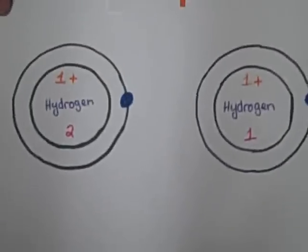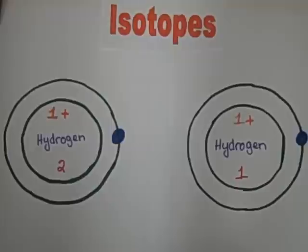There are also these things called isotopes, which are atoms of the same element but have different numbers of neutrons.